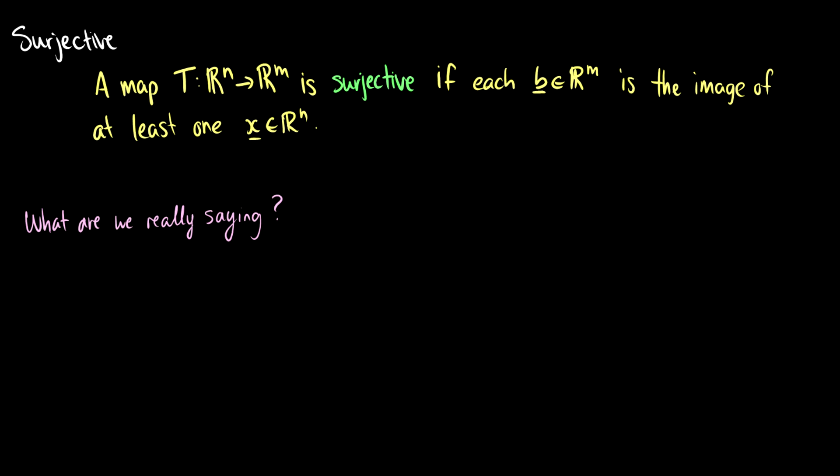So what is a surjective function? You might see this as the word 'onto' — they both mean the same thing. We say that a transformation or a map T from Rⁿ to Rᵐ is surjective if each vector b in Rᵐ is the image of at least one vector x in Rⁿ. Let's draw a picture, because pictures are much better than words.